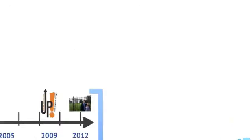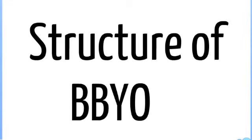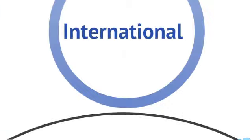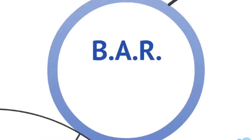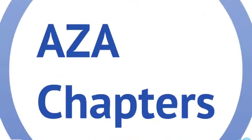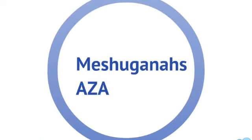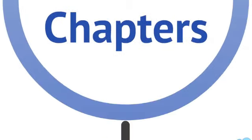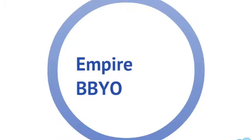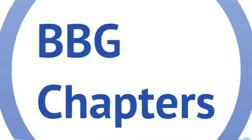Outside of its history, it's important to go over the structure of BBYO. BBYO's international level is broken down into a bunch of regions, like the Big Apple region. In turn, each region is broken down into a bunch of chapters, which include AZA chapters like Meshuggana's AZA, BBYO chapters like Empire BBYO, and BBG chapters like Rainbow BBG.